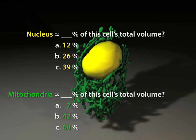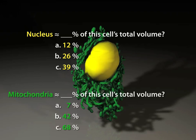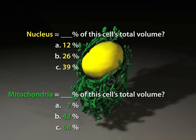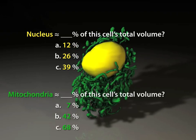How much of the cell's total volume do you think that the green mitochondria occupy? About 7%, 42%, or about 68%?